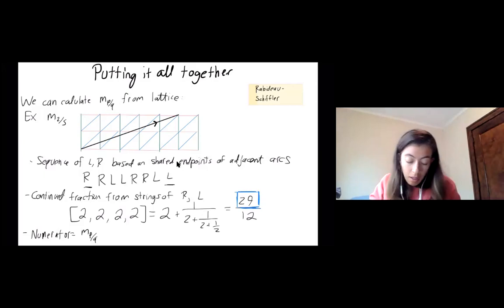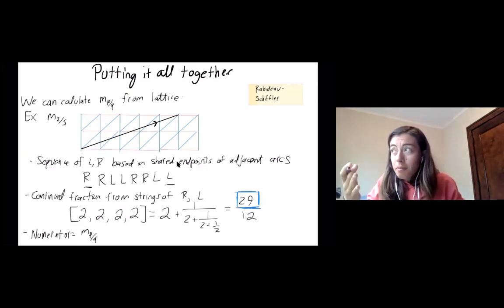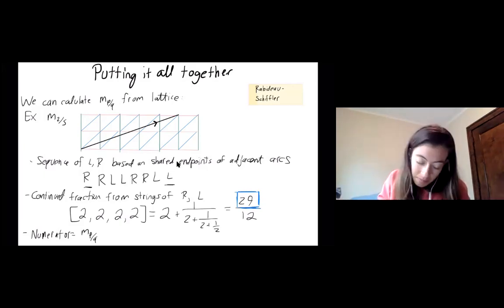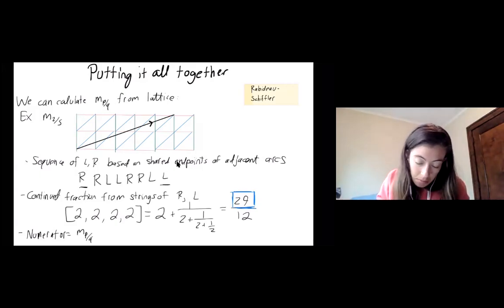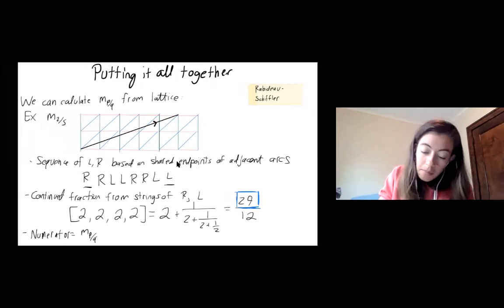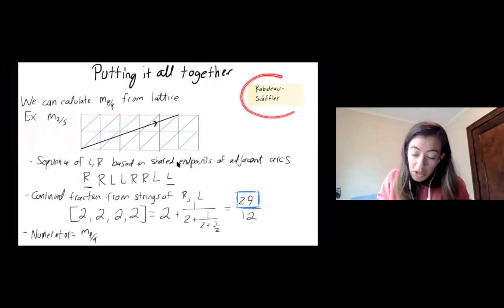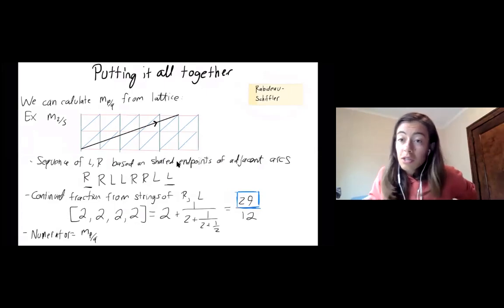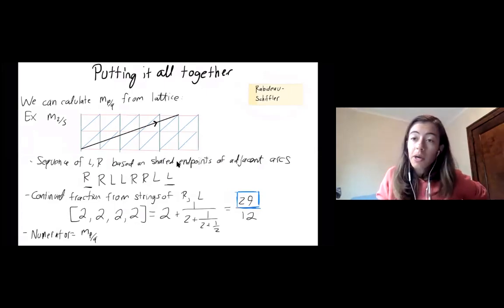Okay. Yes, so the numerator will always be this. The denominator, you could make up a thing that it means, but we'll just ignore it. So I'll just, so I saw this in work by Rabideau and Schiffler. They use, they actually use this to prove certain conjectures about Markov numbers.